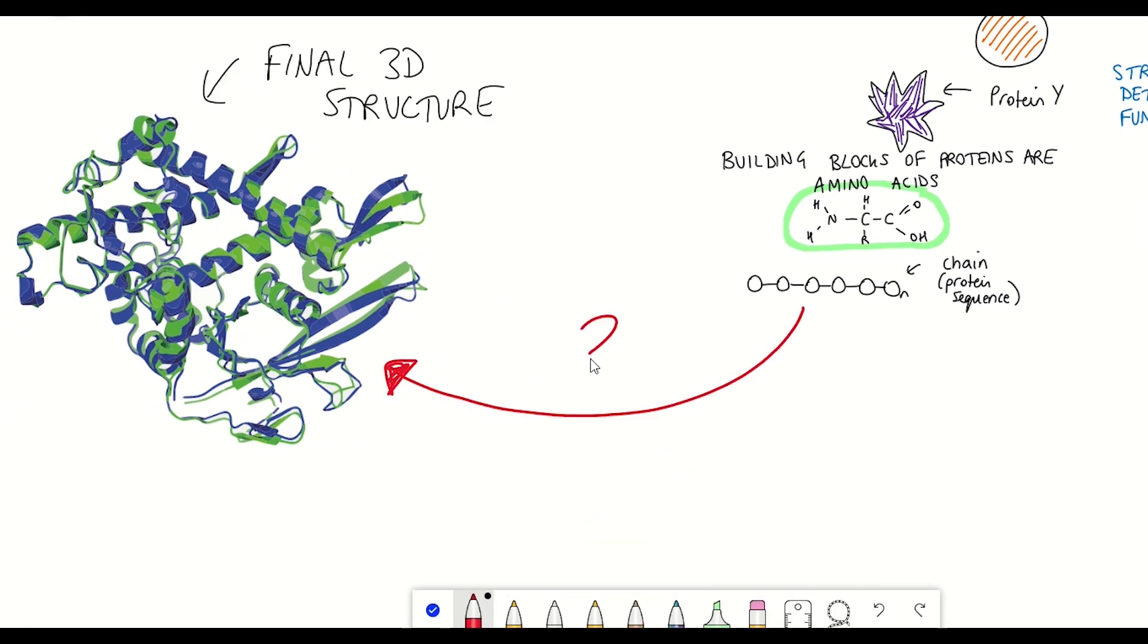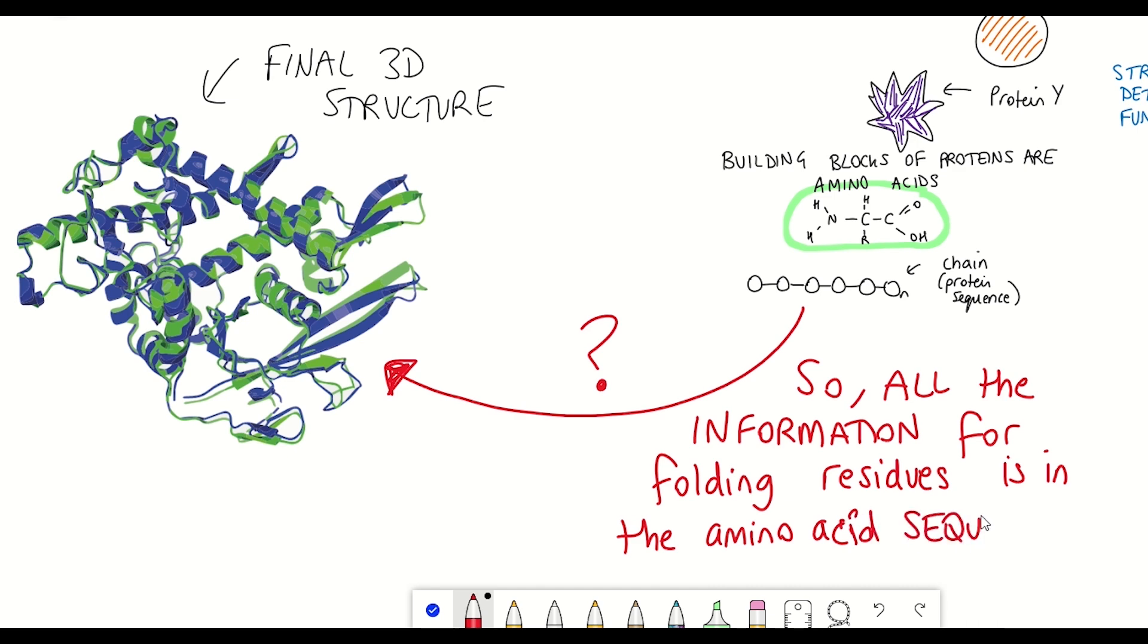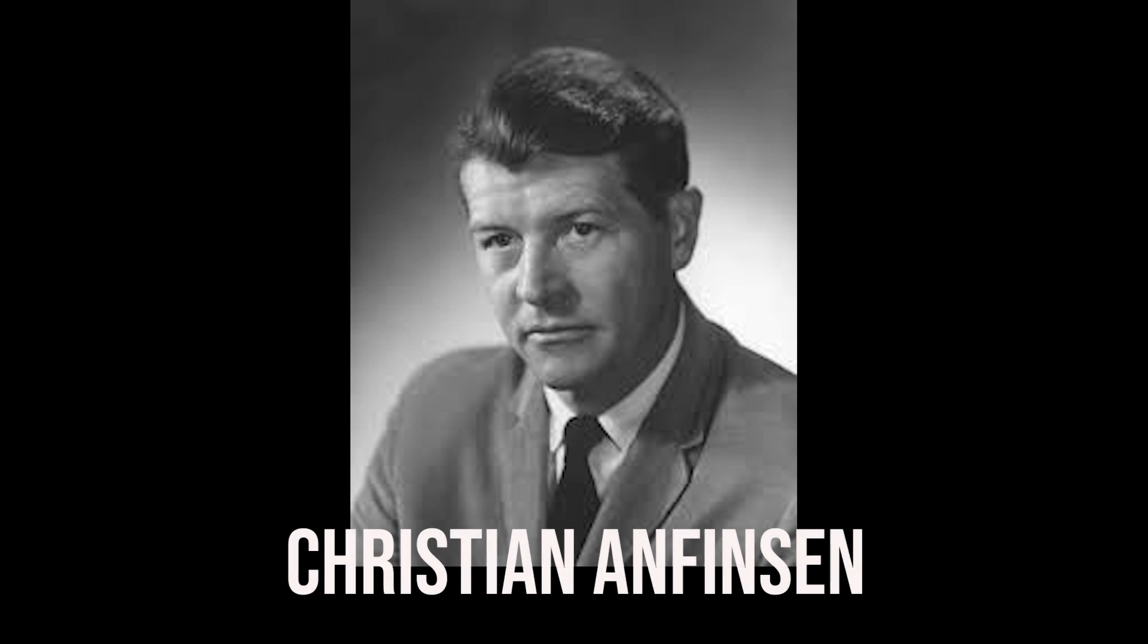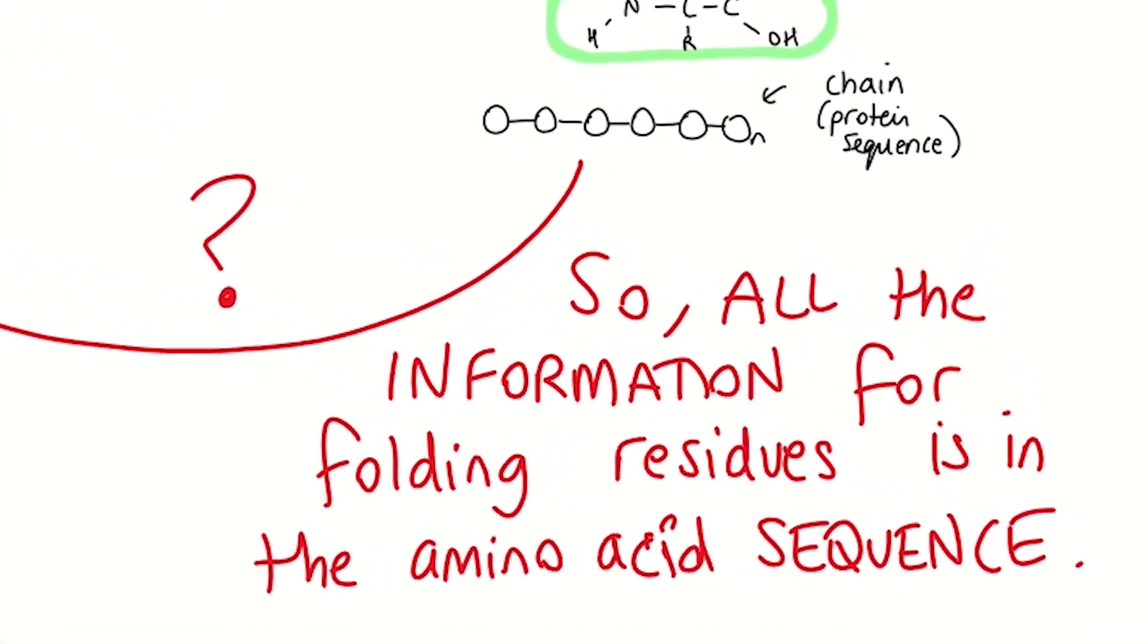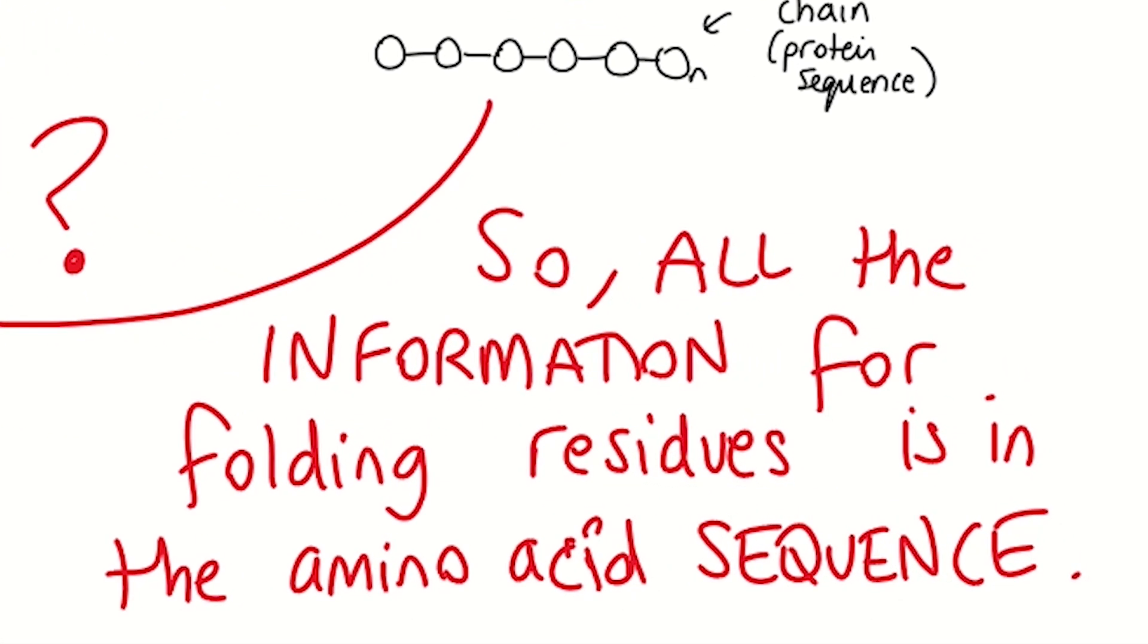So the protein folding problem is under the assumption that all the information for folding the individual amino acids, otherwise referred to as the residues, is actually in the amino acid sequence. And this assumption was proved experimentally by Christian Anfinsen in a very nice series of experiments where he nicely demonstrates that all the information for folding residues is in the amino acid sequence. And this is well summarized in this figure here.